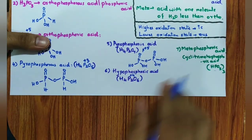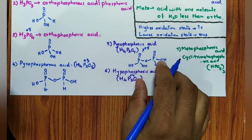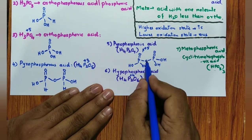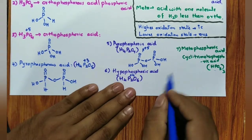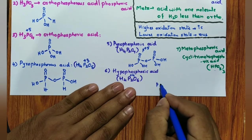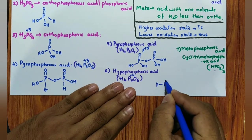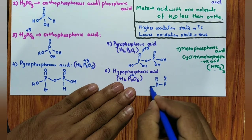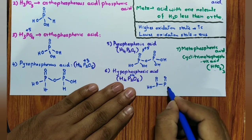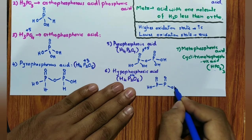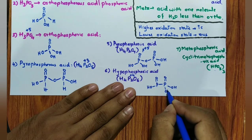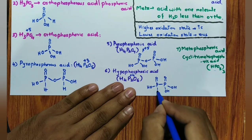Hypophosphoric acid: in this case there is no oxygen bridge between the two phosphorus atoms — instead there is a direct P–P bond. Structure: P=O, direct P–P, P=O, with O–H, O–H, O–H, O–H.